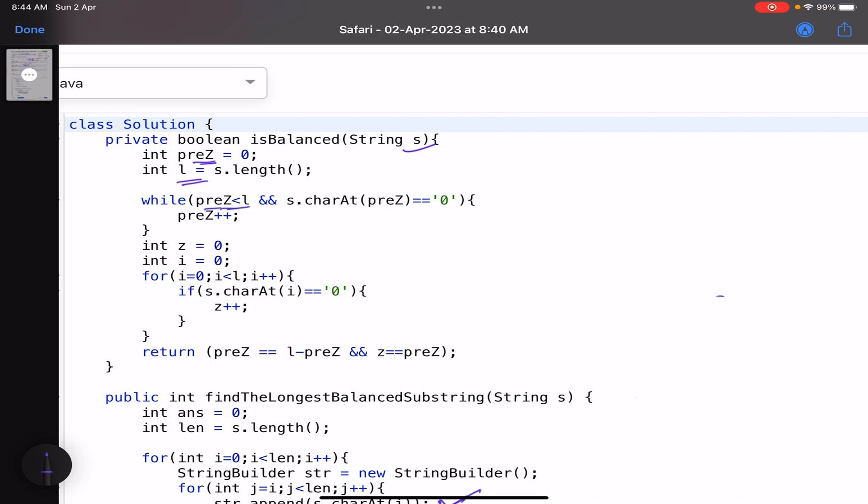While prez is less than n and s.charAt(prez) equals to zero. Meaning, suppose your string is this. So you keep on traversing your string until you are finding zeros. The moment you find a one or you consume the whole string, just break the loop.